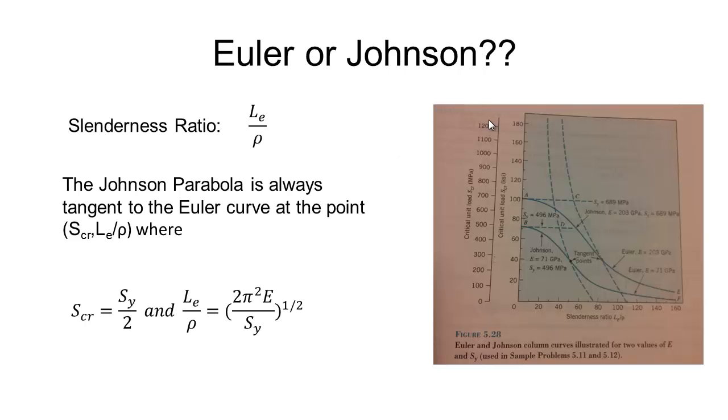Now complication arises when you need to consider whether you're using Euler or Johnson buckling equations. And to do this we use what is called the slenderness ratio, which is the effective length divided by the radius of gyration. So on the right here we have a plot of both the Johnson and Euler curves for two different materials. And the point where these two curves are tangent is given by a certain S critical and slenderness ratio. Where the particular critical length and slenderness ratio for a specific material is given by the yield strength divided by two. And the slenderness ratio given by this term here.